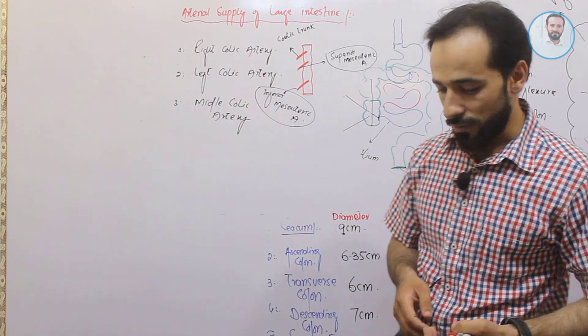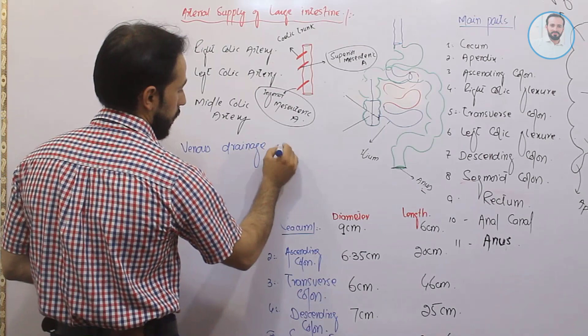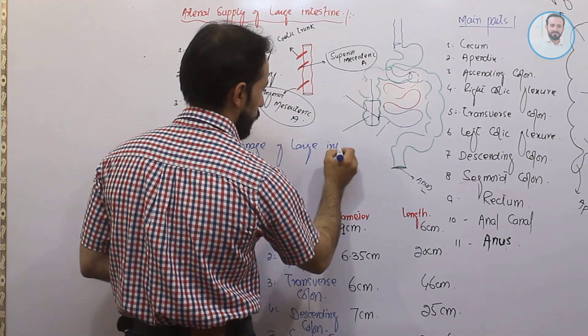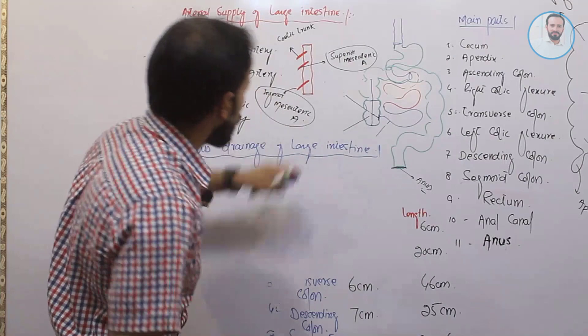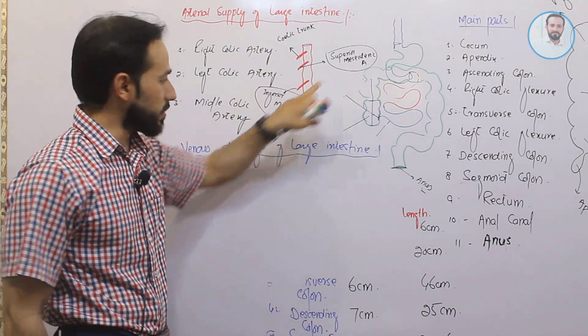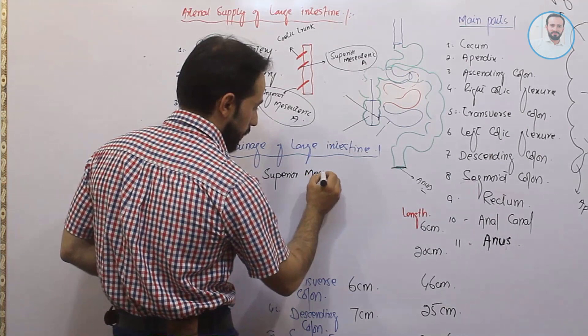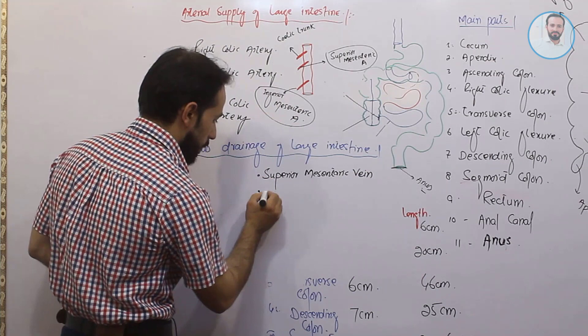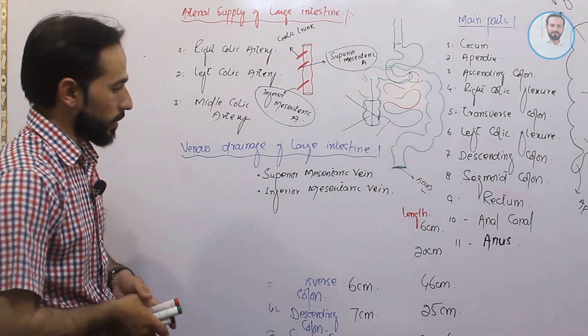The venous drainage of the large intestine is carried by the superior mesenteric vein and the inferior mesenteric vein. These two big veins are responsible for venous drainage of the large intestine.